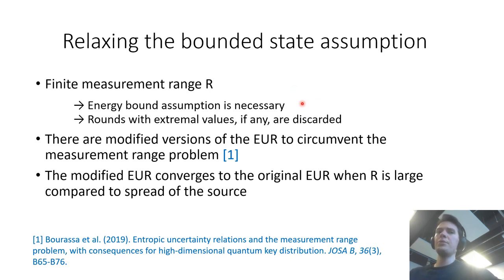So in our case we just considered this assumption was satisfied and rounds with extremal values if there were any were discarded. But we can improve on that and relax this assumption using modified versions of the entropic uncertainty principles. And if you look at this modified version they actually converge to the original entropic uncertainty principle as long as your measurement range is large compared to the spread of the source.